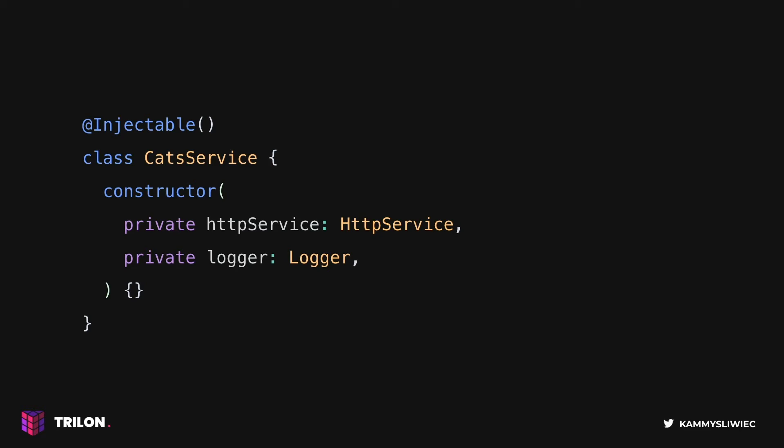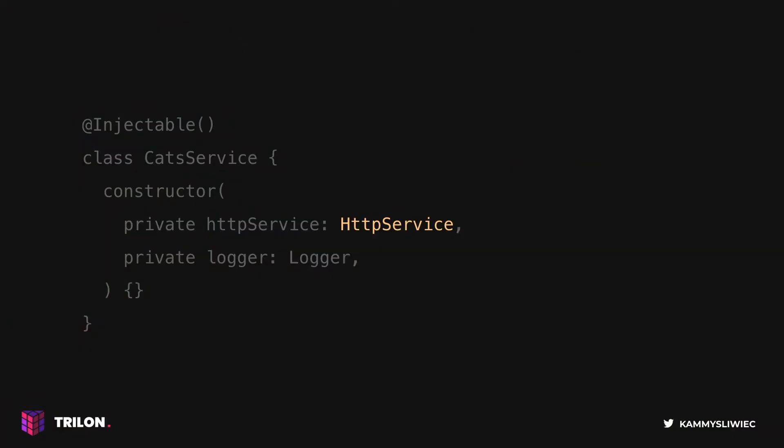Hence, both frameworks supply us with a dependency injection mechanism. Our class now asks for dependencies from external sources rather than creating them inside the body of the class. The question we should ask is: how is it even possible that either Angular or NestJS knows that we want to inject HTTPService at position one and Logger at position two?